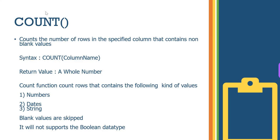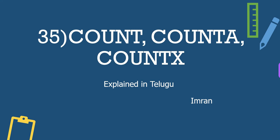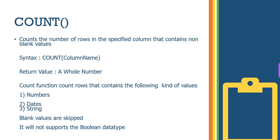So the first one is COUNT. We have COUNT, COUNTA, and COUNTX. These deal with non-blank values — we ignore the blank values. COUNT counts the number of rows in a specified column that contains non-blank values. The syntax is COUNT with a single column. It returns a whole number. This is not a calculated column — it is a measure.